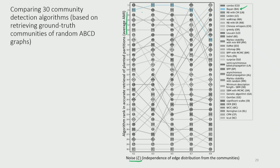Some algorithms are excellent when noise is low — for example, LN is the third best algorithm but becomes relatively worse as we increase noise. For the algorithm we developed: it's second best at very low noise, then best, then second best again, but when noise is very large — around 90% — its performance is not as good.